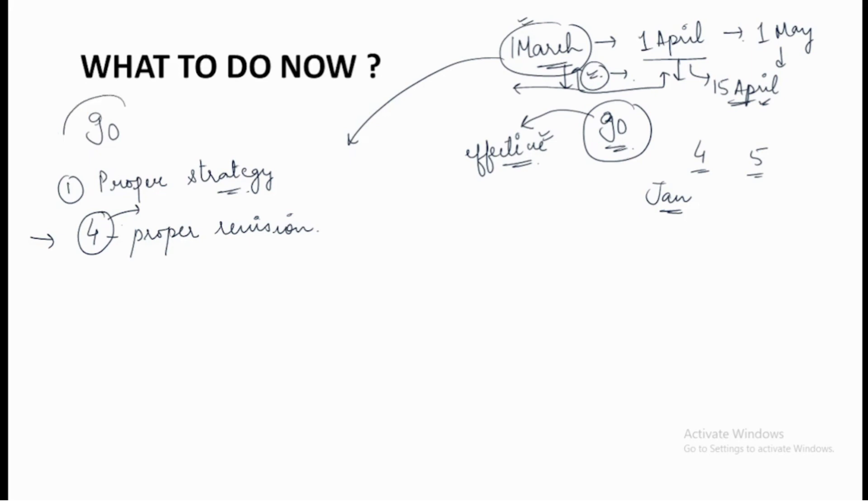For these 90 days, keep in mind you need at least four proper revisions. Second thing I would suggest - in the complete March month, you can start to make your bullet pointers.